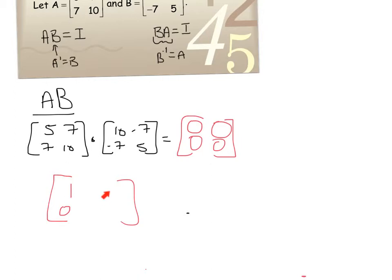Following that same rationale, I want row 1, column 2, so I use row 1, column 2. That's 5 and 7, and negative 7 and 5. These guys are opposites of each other, so when I add them together I get 0. Next I want row 2, column 2. That's actually 10 right there. So I take 7 times negative 7, which is negative 49, plus 50. That gives me my 1.